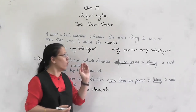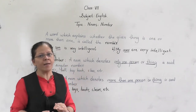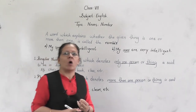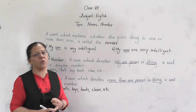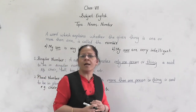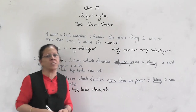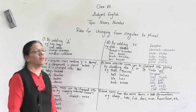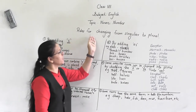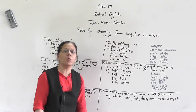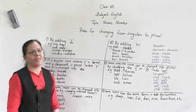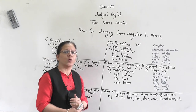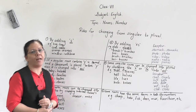So, have you understood what is a noun number? Noun number means singular or plural. Singular denotes only one person or thing, and plural denotes more than one person or thing. Now let us learn the rules for changing a singular noun to a plural noun. There are certain rules, so let us see all these rules one by one.